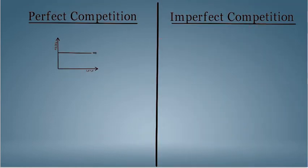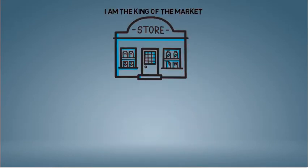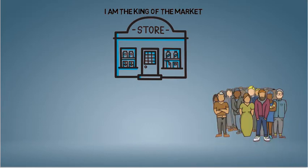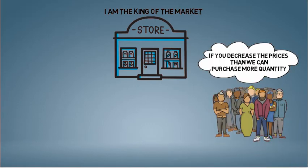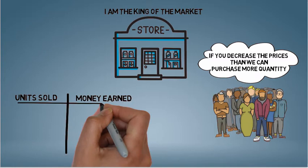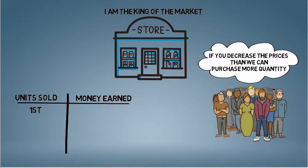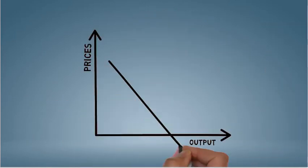On the other hand, in imperfect competition, a case such as monopoly, the marginal revenue curve will be different. In monopoly, the monopolist can only sell more quantities if he reduces price. Reduction in price means reduction in revenue from every extra unit sold. Hence, your marginal revenue curve will be a downward sloping curve here.